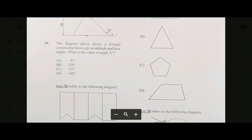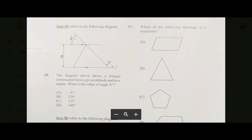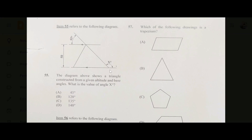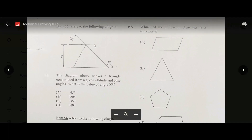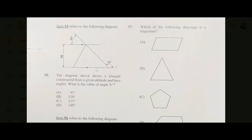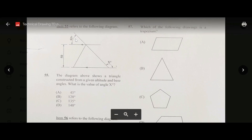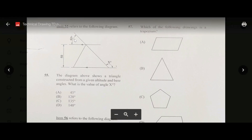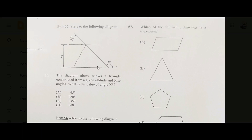Number fifty-five: we have a triangle with this line, and this angle is 45 degrees. The two lines are parallel, running in the same direction, so the alternate angle here is also 45 degrees. The entire straight angle is 180 degrees, so 180 minus 45 gives 135 degrees — the answer is C.